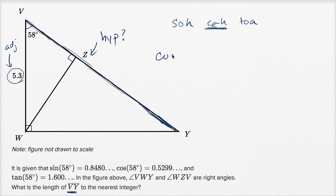So the cosine of 58 degrees is going to be equal to the length of the adjacent side to that angle, 5.3, divided by the length of the hypotenuse. And that's actually what we care about—that's the length of segment VY, which we could just write VY without writing the line above it. And this means the length of VY. And so now we could just solve for VY.